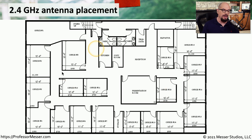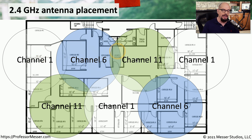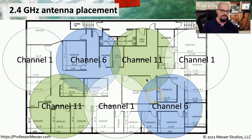Here's a building layout where we place access points around the building so they just barely overlap with each other. We choose different channels for each access point so nothing conflicts. Channel 1 does not connect with any other channel 1 nearby, and channels 6 and 11 are configured similarly. By separating the channels this way, we can be assured there's no interference between access points, and the network will run as efficiently as possible.